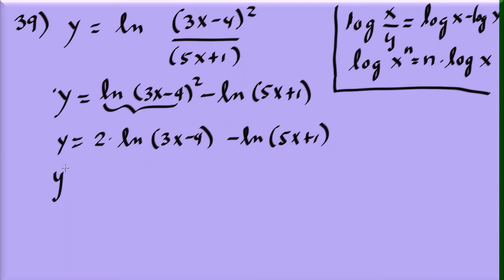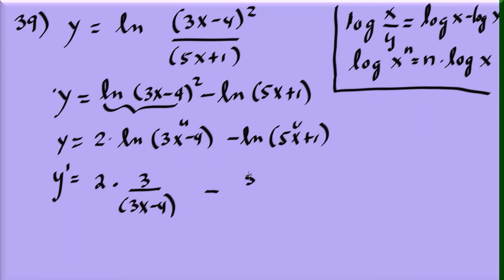Now differentiate: for 2 times natural log of (3x minus 4), the u is (3x minus 4), u prime is 3, giving 2 times 3 over (3x minus 4), which is 6 over (3x minus 4). Minus: u is (5x plus 1), u prime is 5, so that's 5 over (5x plus 1).